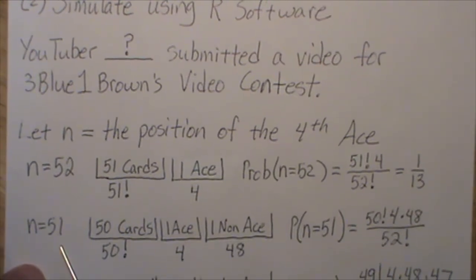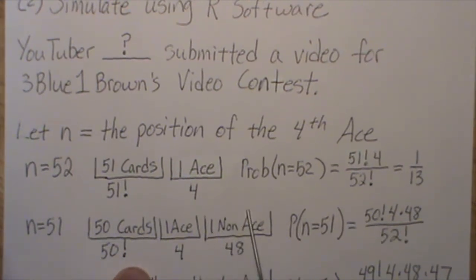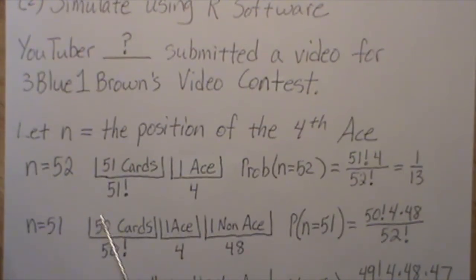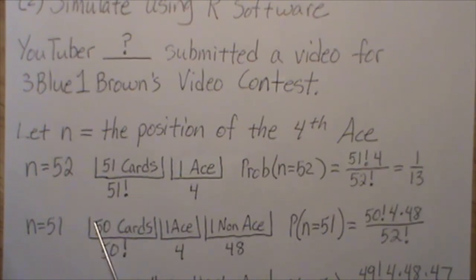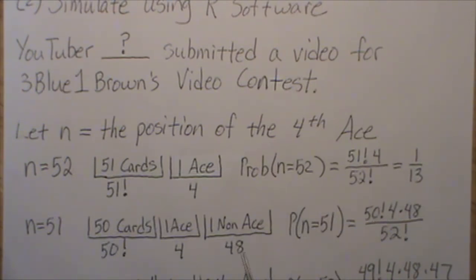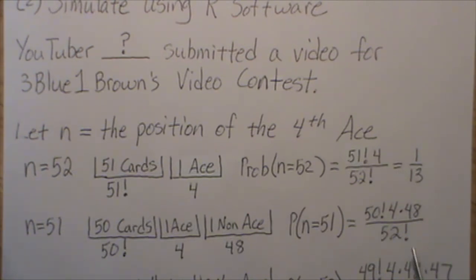Let's let N equal 51 — that means it's the penultimate card in the deck. Penultimate in mathematics means second to last. So we have three bins: one non-ace at the end, one ace before it, and then 50 cards in the first bin. That way, the fourth ace is the penultimate card. How many ways can we choose a non-ace? There are 48. How many ways to choose an ace? Four. How many ways to arrange the 50 remaining cards? 50 factorial. So the probability that N equals 51 is the product of these numbers divided by 52 factorial. Wait for the plot — it is so intriguing.